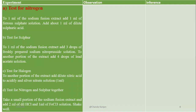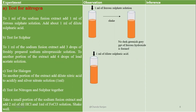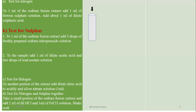We take the sodium fusion extract and start with the test for nitrogen. We add 1 ml of ferrous sulfate solution, shake it, and note that a greenish-grey precipitate of ferrous hydroxide is formed. Then we add 1 ml of dilute sulfuric acid and heat it. No formation of Prussian blue precipitate is observed, so all tests are negative — nitrogen is absent.